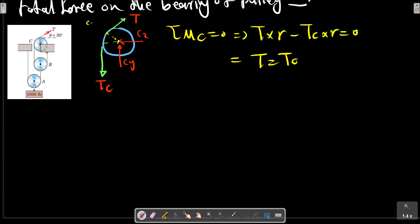For pulley B, we have two of these forces. If we make a section here, Tc equals to Tb. Tc and Tb.